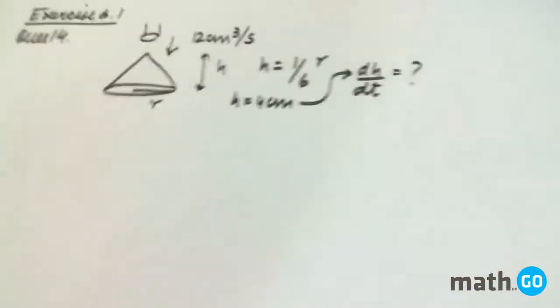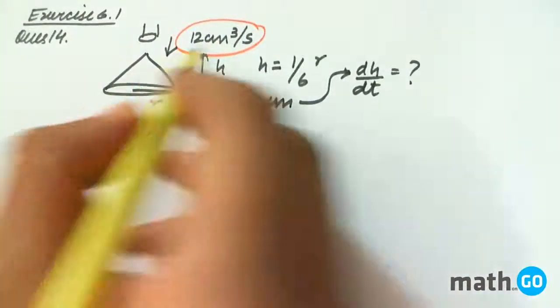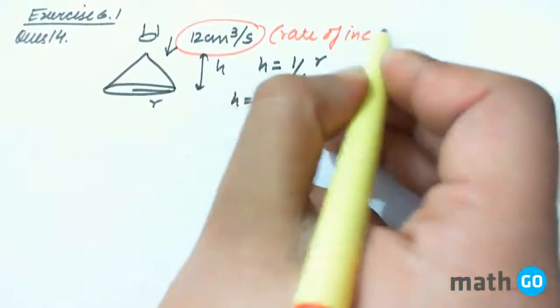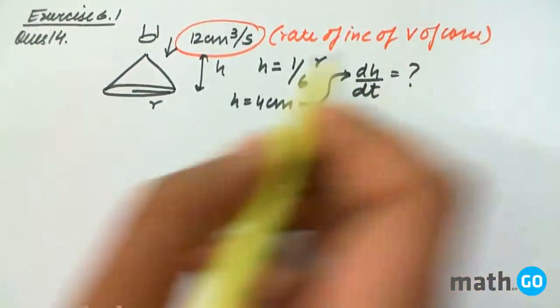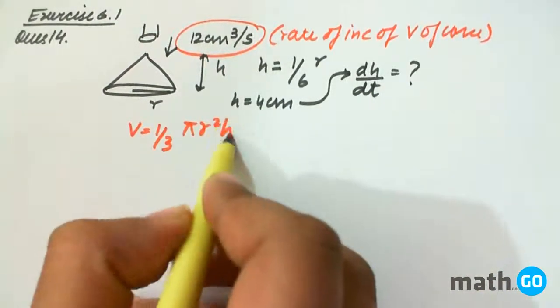Now we see here that this 12 centimeter cube per second is nothing but the rate of increase of volume of the cone. And we know that the volume is 1 by 3 pi r square h.